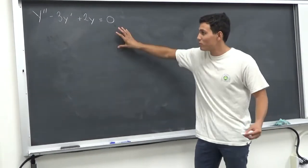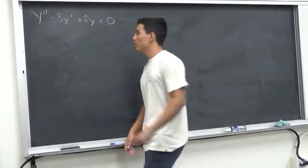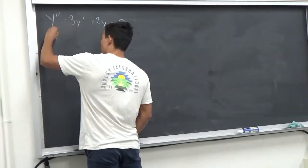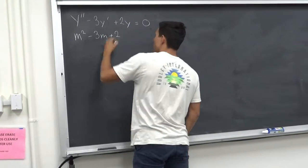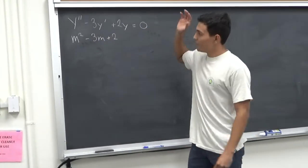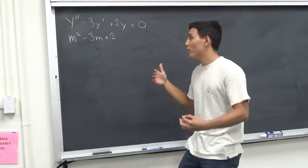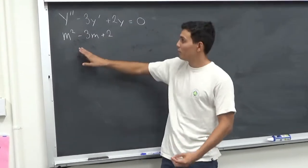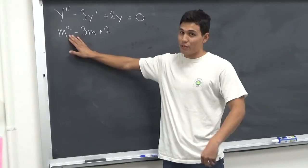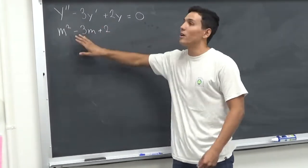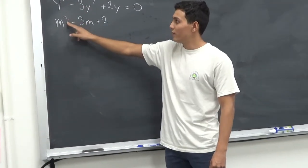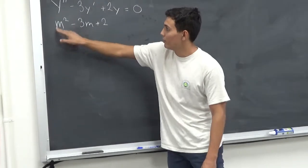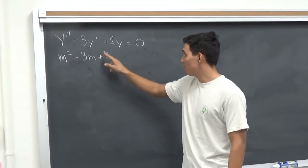So we can represent this differential equation with a polynomial, and let that be m squared minus 3m plus 2. So wherever there is a derivative of order n, we'll replace it with a variable of degree n. So order 2 derivative, then we have a polynomial right here of degree 2. Same thing follows.